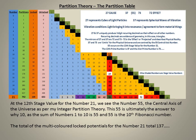It's beautiful also to see how the 137 is encompassed by the numbers 12 and 21, which are the key numbers in the partition table where everything happens. At the twelfth stage value for the number 21 in the partition table, we see the number 55, the central axis of the universe as per my partition theory. This is ultimately the answer to Y10. The sum of numbers 1 to 10 is 55.